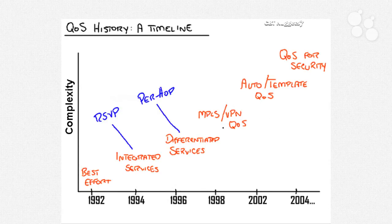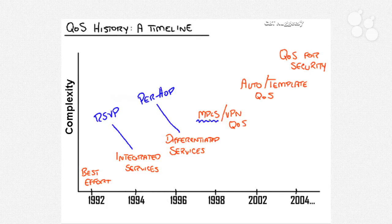Once we reached around the year 2000, that was where we came out with MPLS and VPN quality of service. MPLS — multi-protocol label switching — is a method that allows us to essentially route at layer two. Service providers primarily use MPLS to get their customers' traffic through the network very quickly. We were able to implement quality of service in those MPLS networks and within VPNs, which allowed people to connect from a home network with an IP phone or high priority traffic and be prioritized all the way through the network.